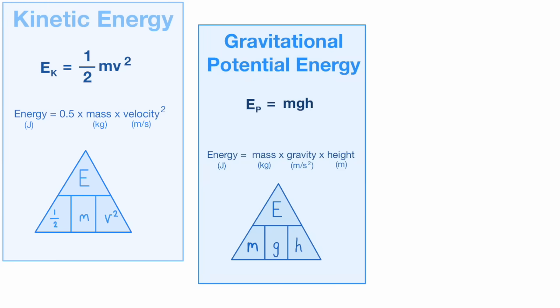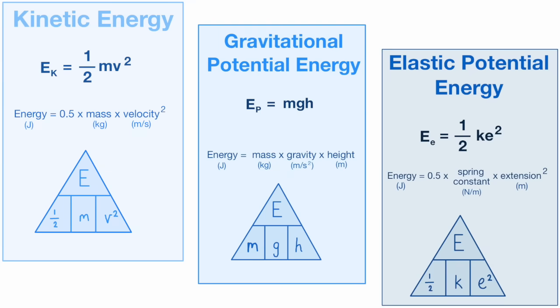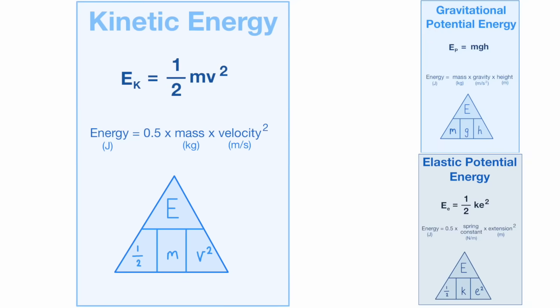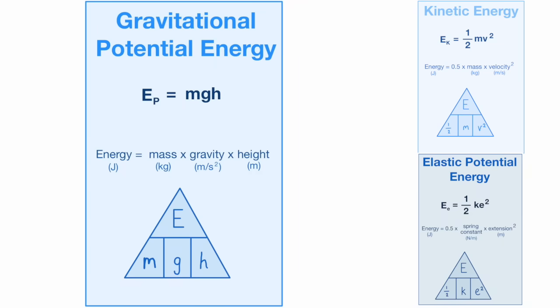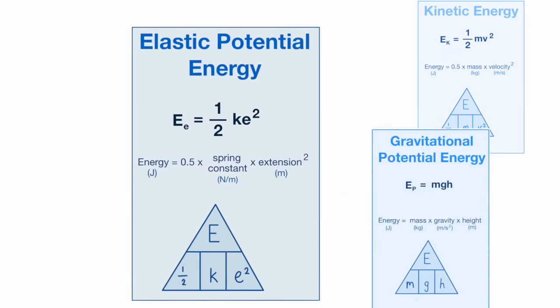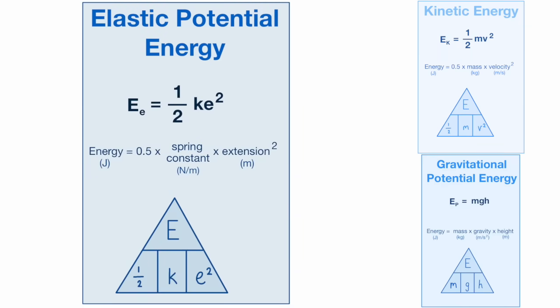Three of those energy stores are kinetic, gravitational potential, and elastic potential. These have three very important equations that you must remember. Kinetic energy: energy equals half times mass times velocity squared. Gravitational potential energy is mass times gravitational field strength times the height, and elastic potential is half times the spring constant times the extension squared.